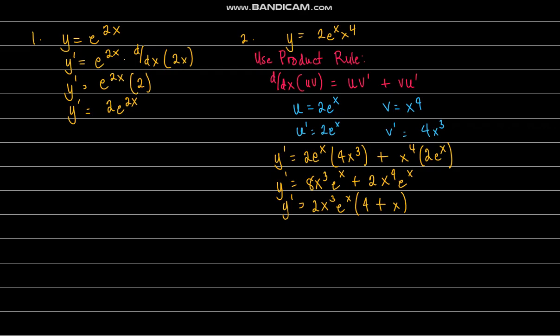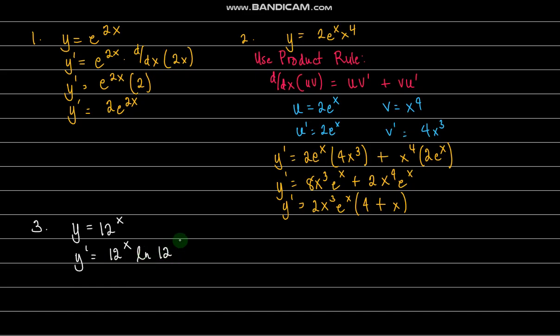Now what if we have y equals 12 to the x? How are we going to differentiate that? It's very simple. The derivative is 12 to the x times the natural logarithm of the base, which is 12. The rule here is: the derivative of a to the x is a to the x times ln of a.